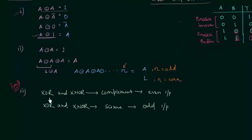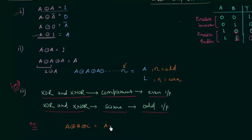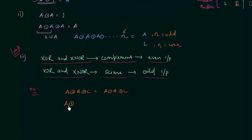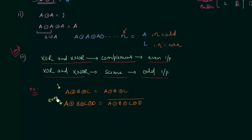This is a very important point. For example, A XOR B XOR C equals A XNOR B XNOR C because we have an odd number of inputs (3). But for A XOR B XOR C XOR D, we have 4 inputs (even), so A XNOR B XNOR C XNOR D is the complement of A XOR B XOR C XOR D.